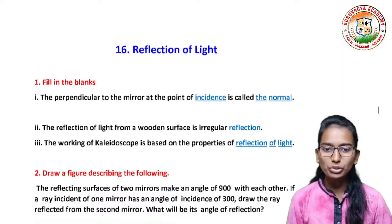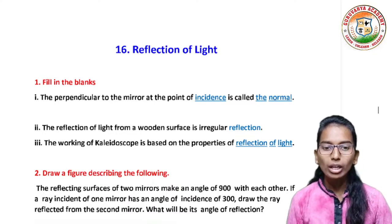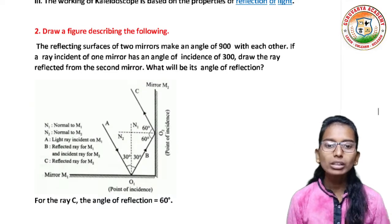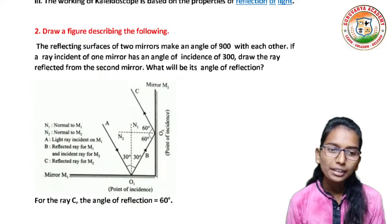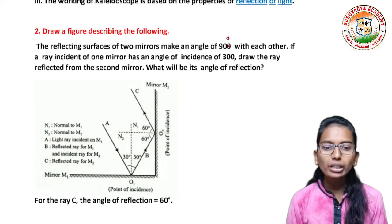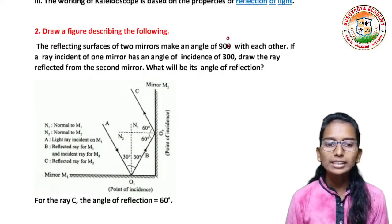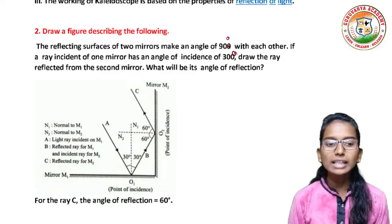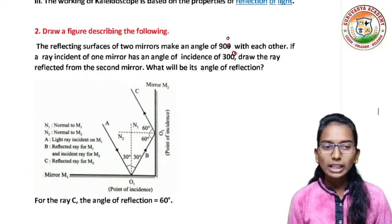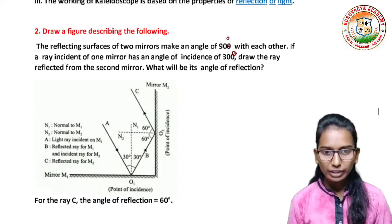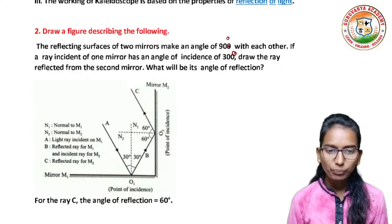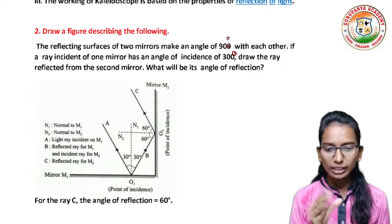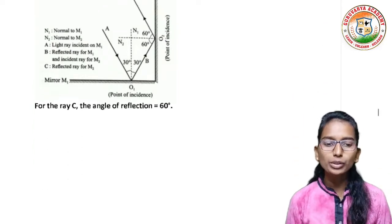The second question is draw the figure describing the following. The reflecting surfaces of two mirrors make an angle of 90 degrees with each other. If a ray incident on one mirror has an angle of incidence 30 degrees, draw the ray reflected from the second mirror. What will be its angle of reflection? So we will describe the figure with angles 30, 60, 60, Mirror M2, Mirror M1, and proper labeling. For the ray, the angle of reflection is equal to 60 degrees.